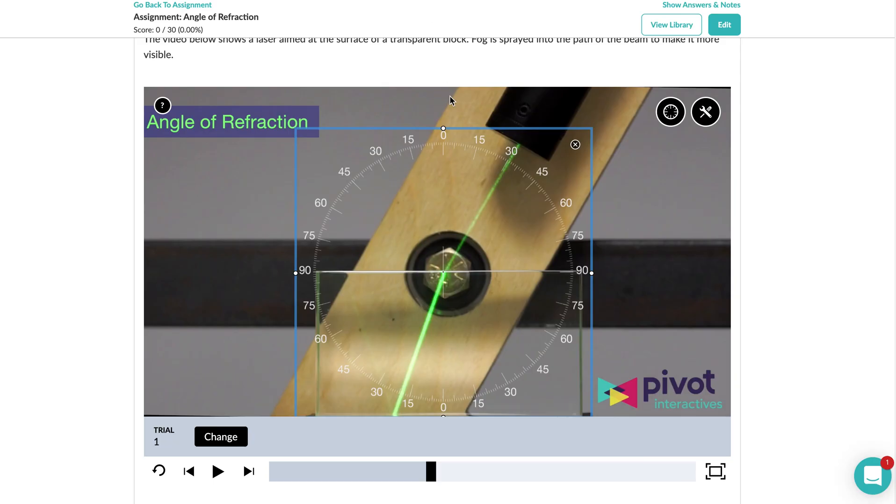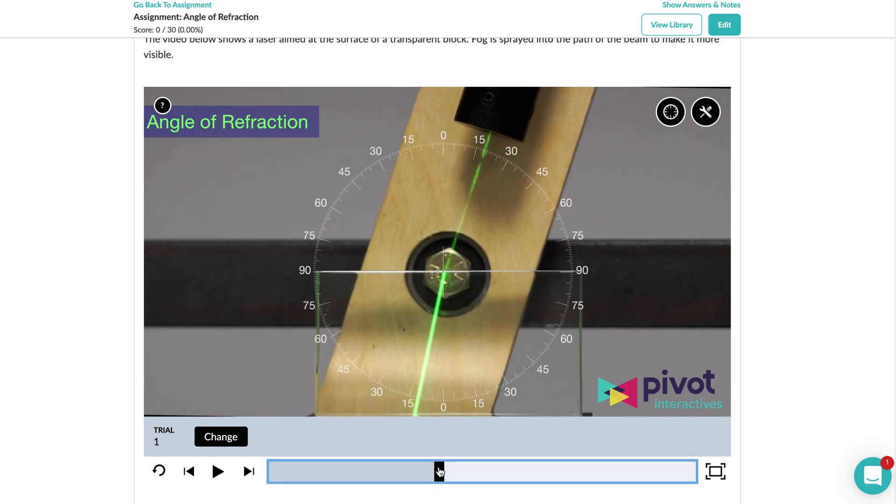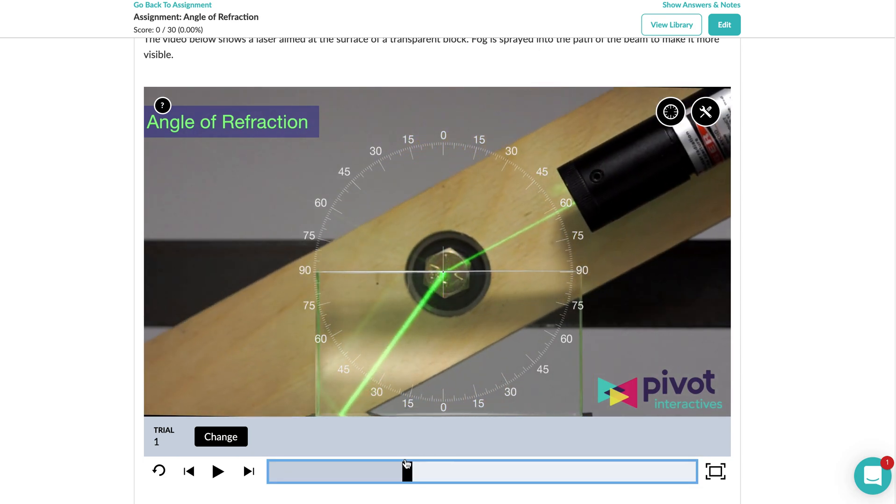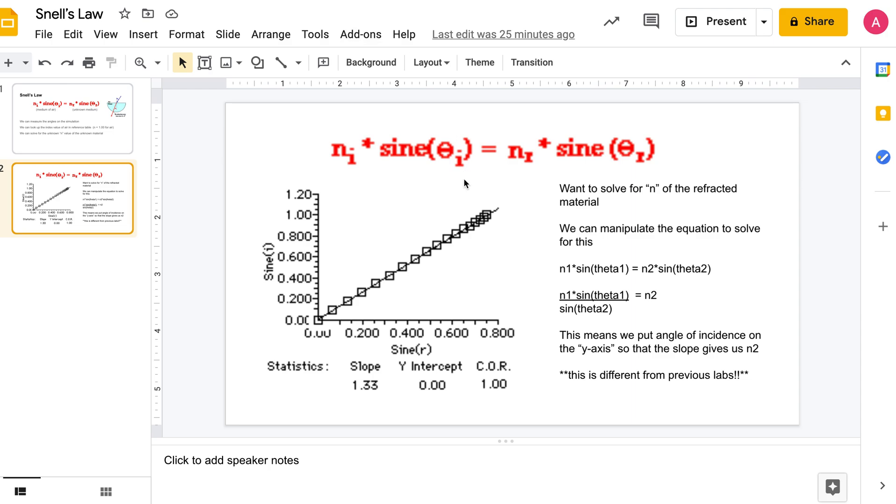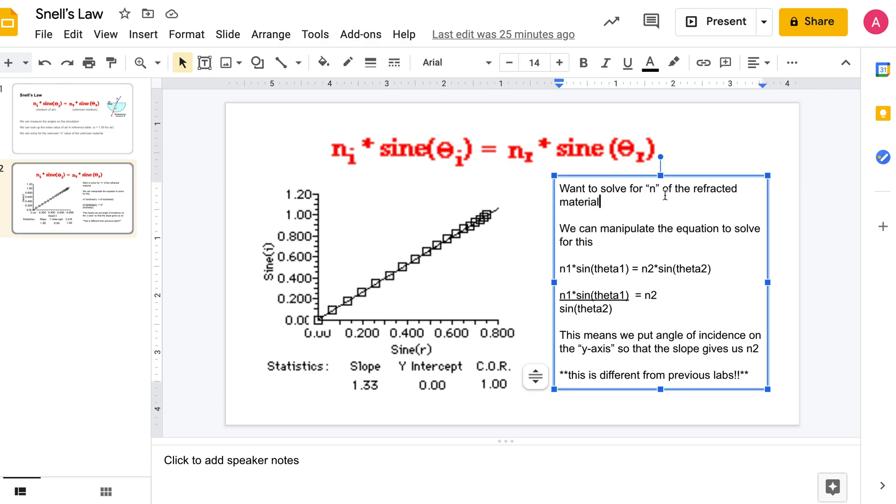It gets a little tricky. Usually we put our independent variable on the x-axis and our dependent variable on the y-axis. In this case in the simulation, the angle of incidence affects how it refracts in the medium, so we would call our angle of incidence the independent variable. But when we set up the graph it's going to look a little bit different.